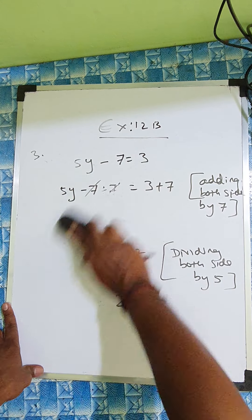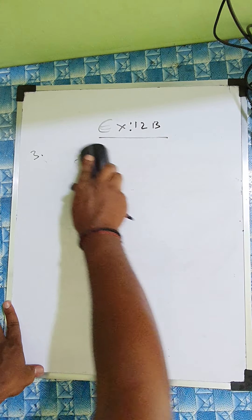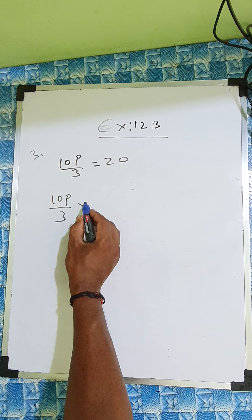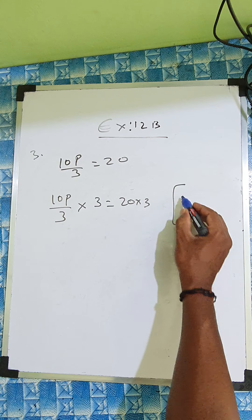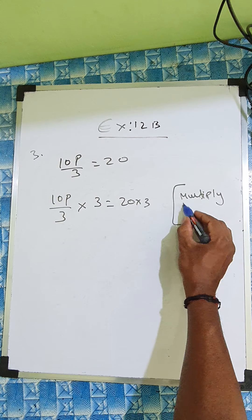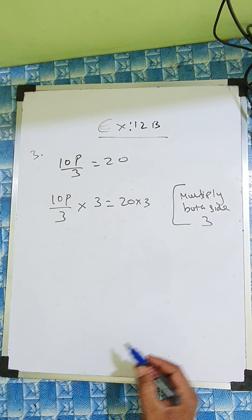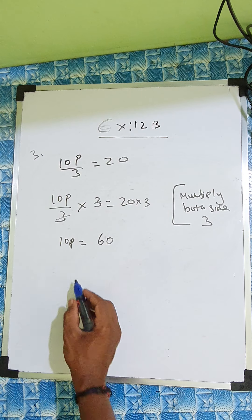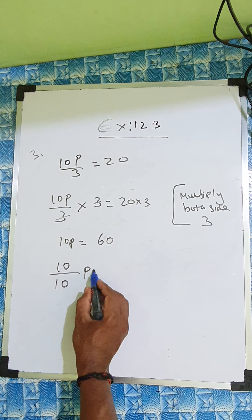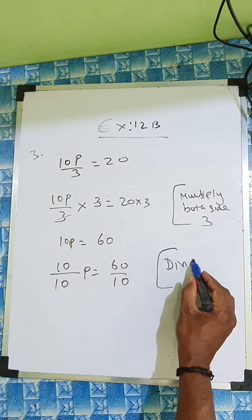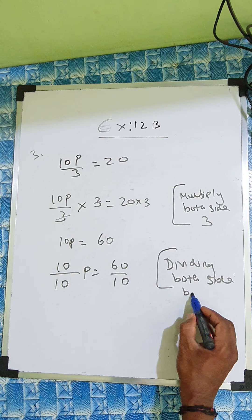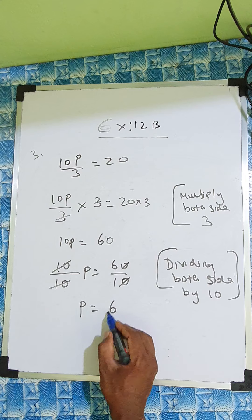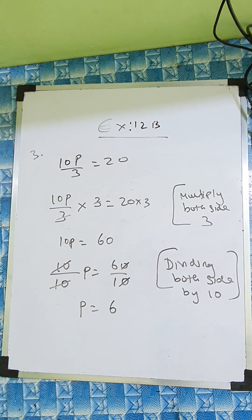Now the third equation in question 3: 10P by 3 equal to 20. So we multiply both sides by 3 — multiplying both sides by 3. So 3 and 3 cancel, 10P equal to 20 into 3 is 60. Now divide both sides by 10 — dividing both sides by 10. So 10 and 10 cancel, P equal to 60 divided by 10, answer is 6. Therefore P equal to 6.